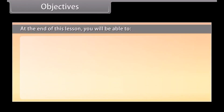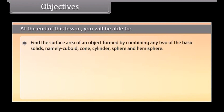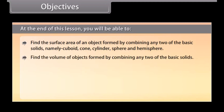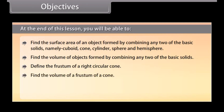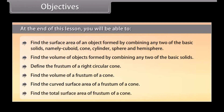Objectives. At the end of this lesson, you'll be able to find the surface area of an object formed by combining any two of the basic solids — namely, cuboid, cone, cylinder, sphere, and hemisphere. Find the volume of objects formed by combining any two of the basic solids. Define the frustum of a right circular cone. Find the volume, curved surface area, and total surface area of a frustum of a cone.